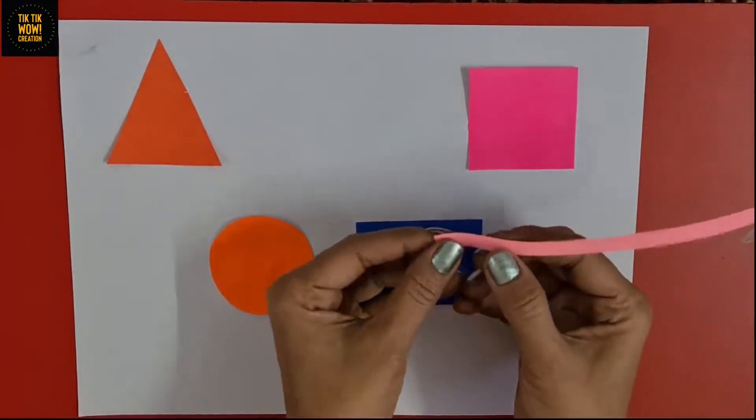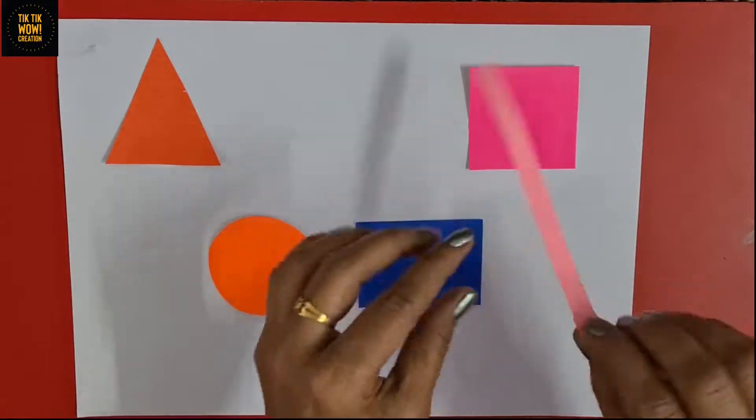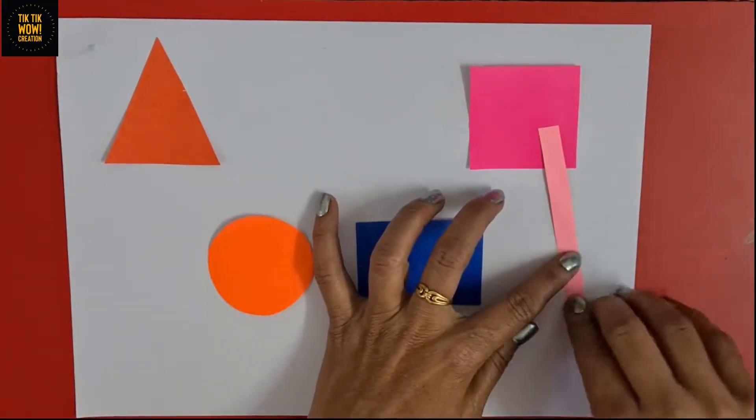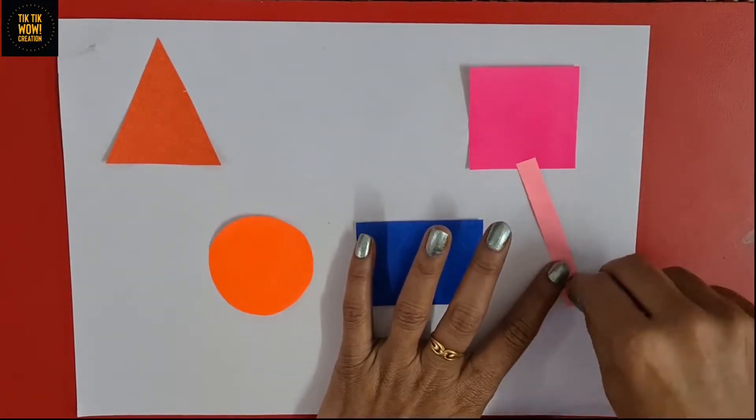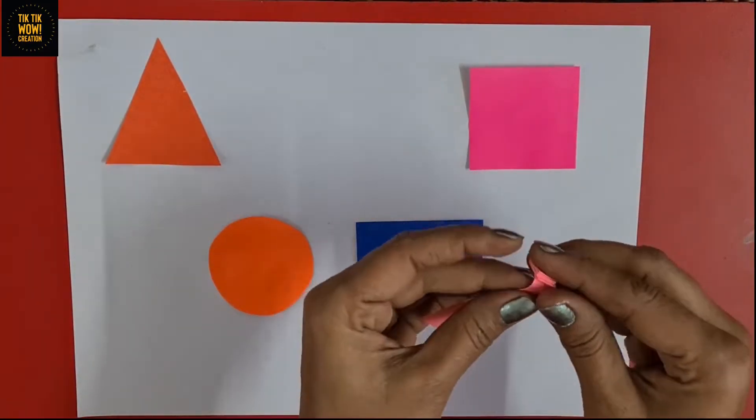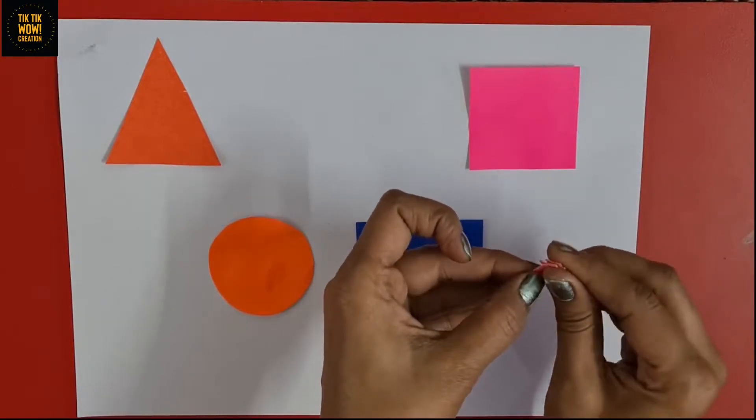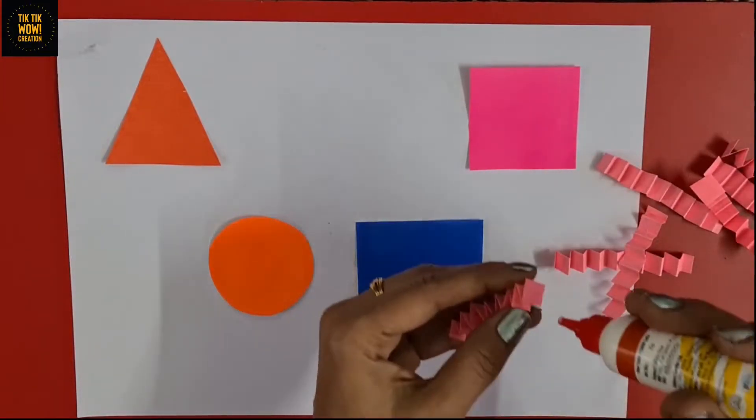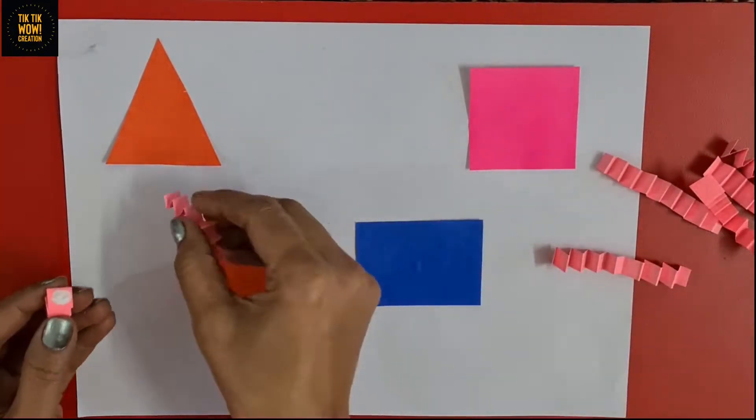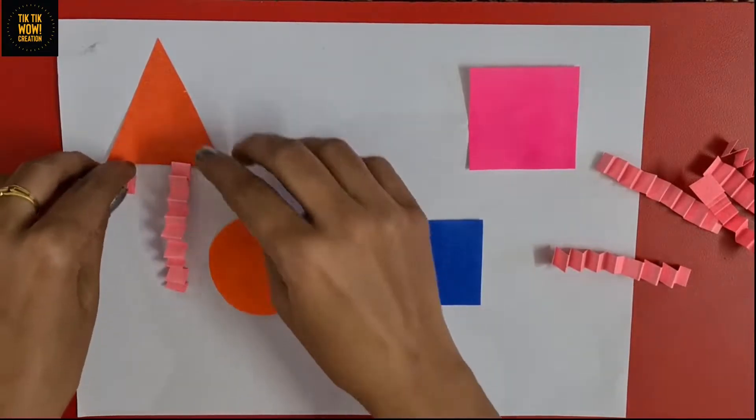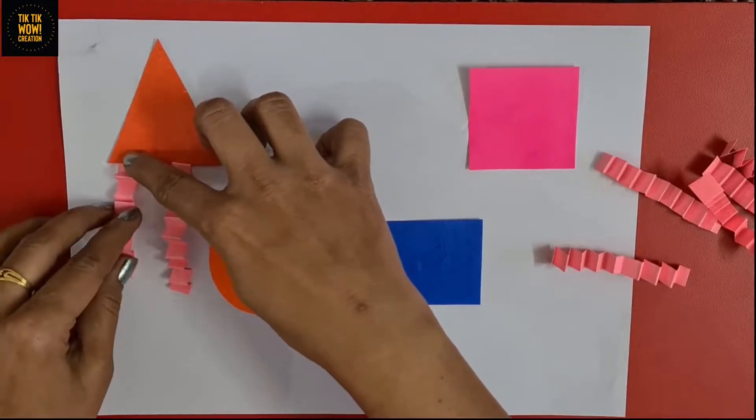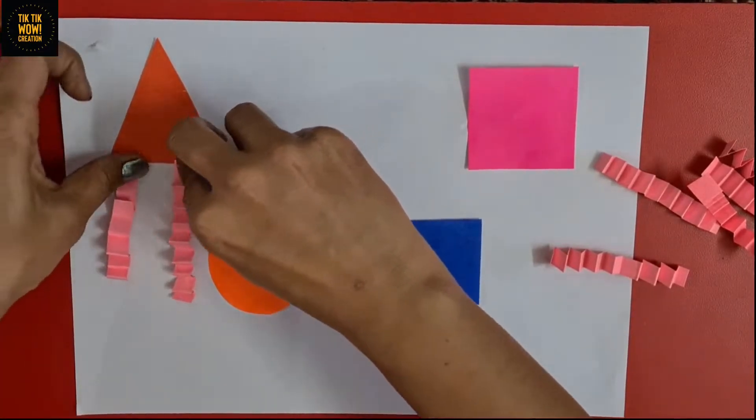After pasting all these shapes, take a small strip of paper and fold it like this. Total we need eight strips like it. Now paste all these strips with shapes to give them a funny look.